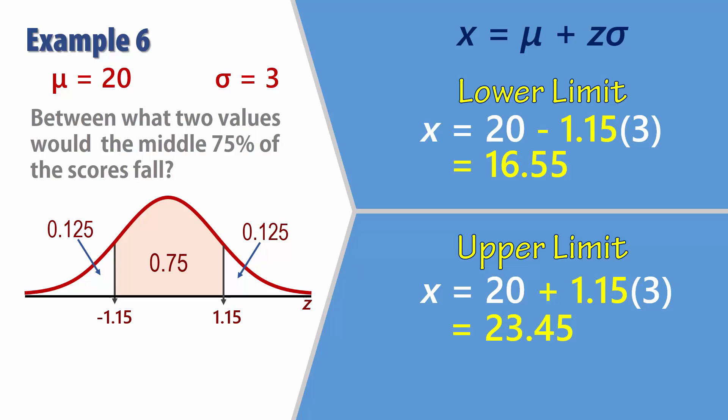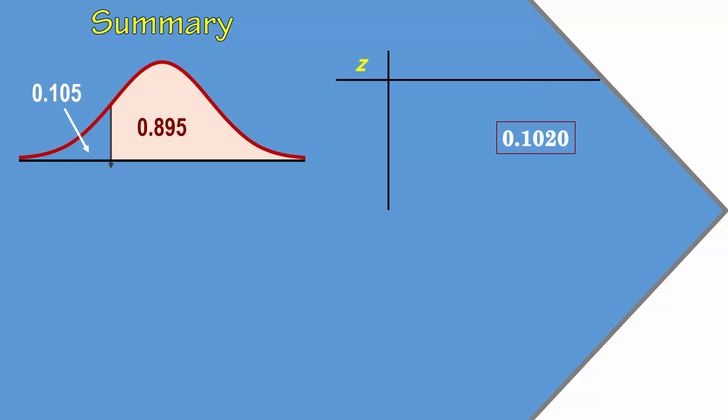In summary, to recover a score for a normal distribution, construct the normal curve identifying the area of the required probability, then search for the closest less than area to it in the Z tables. Once you find the closest area, locate its corresponding Z score.